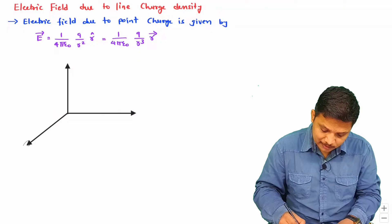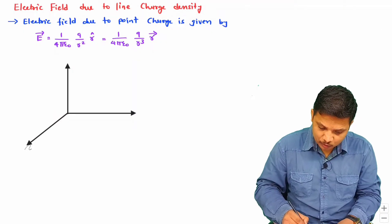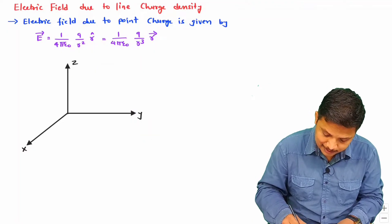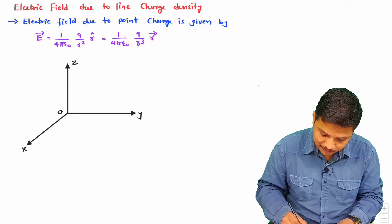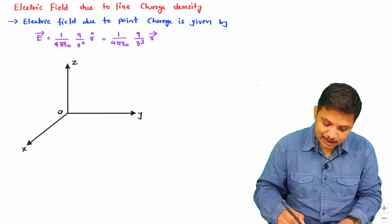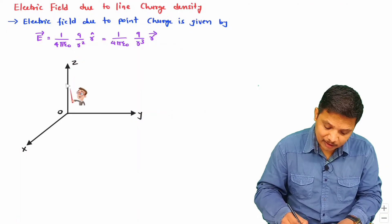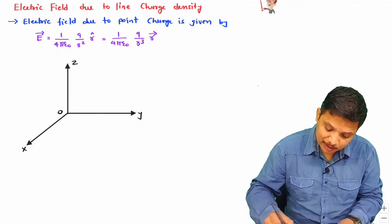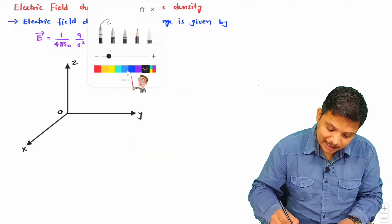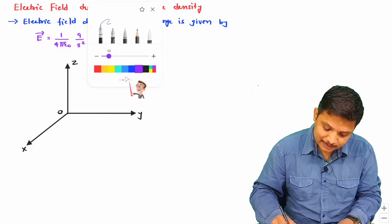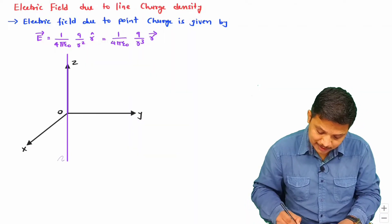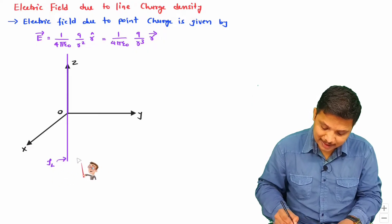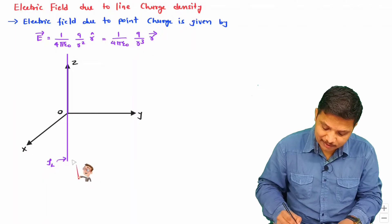In this three-dimensional coordinate system, this is the x-axis, this is the y-axis, and this is the z-axis, with the origin here. I am going to place the line charge density on the z-axis where z varies from minus infinity to plus infinity. So let me place the line charge distribution rho_l on the z-axis.